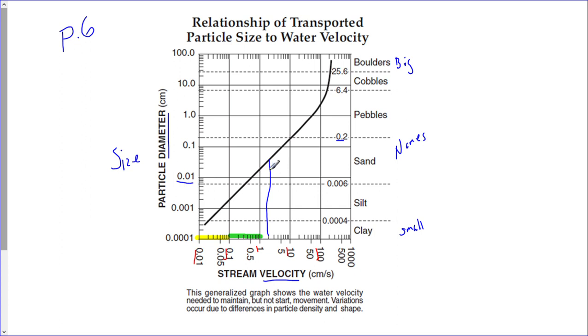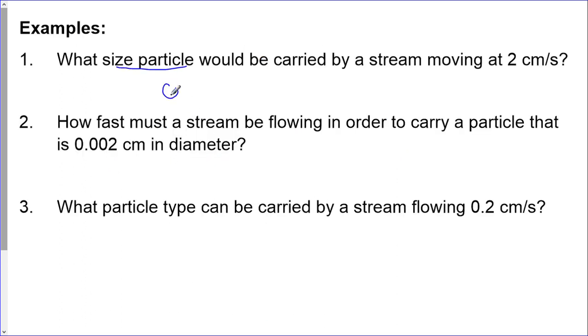Now since I want the particle size, meaning the diameter, I'm going to come straight over to the side like this. So that's where I would intersect because here's the graph. So if this is 0.01, 0.02, 0.03, 0.04, so the particle size would be 0.04 centimeters.